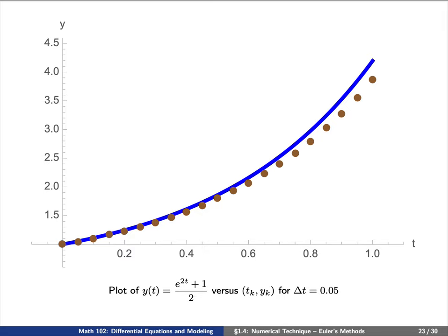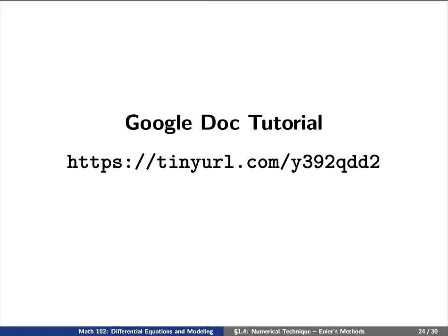Now you can see not only are there more points t sub k comma y sub k, but these gold points do a much, much better approximation of getting closer to the actual solution y of t.